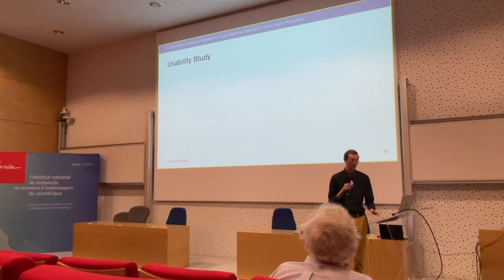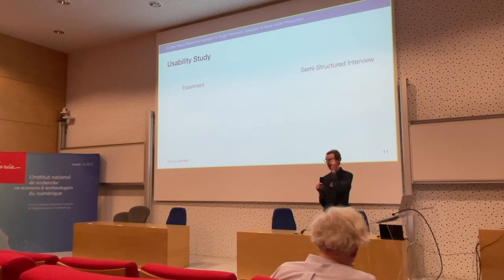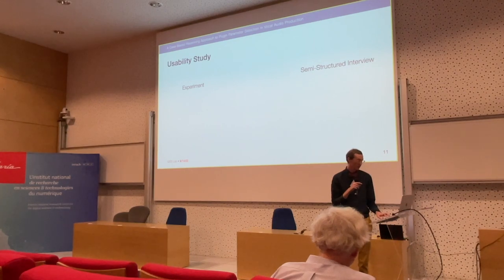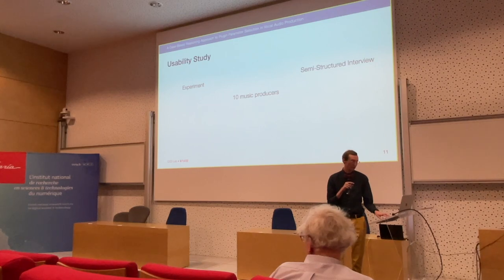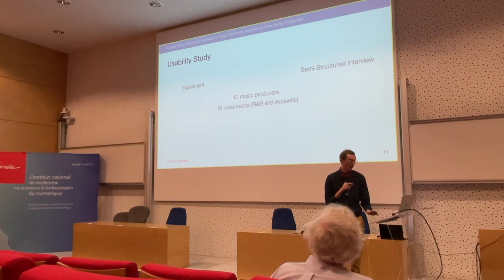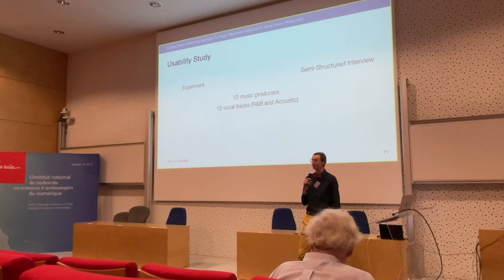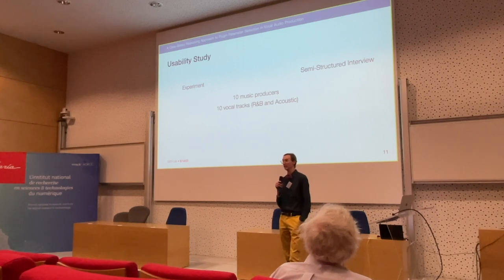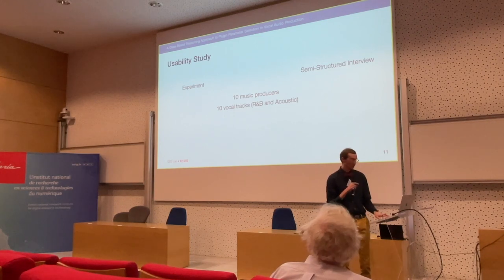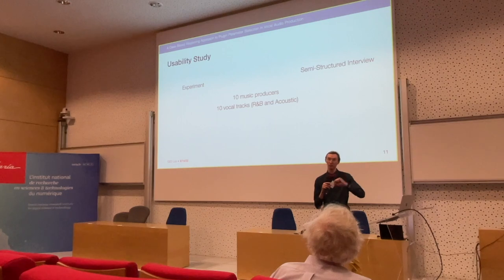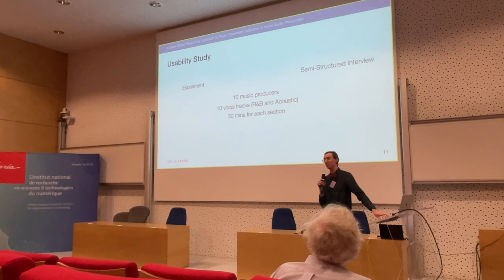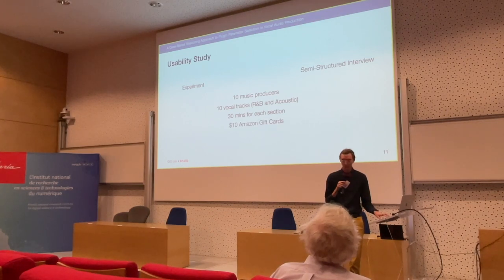For our usability study, we wanted to examine two things: the experiment itself, and a semi-structured interview that happened after. It was within-subject, so all participants did everything. There were 10 music producers used to evaluate both. Participants were instructed to produce tracks for two dichotomous genres. We changed from R&B and electric to R&B, and replaced gendered voice labels with soprano-leaning or tenor-leaning voices. Five participants did soprano-leaning first, then tenor, and the other five did tenor first, then soprano to alleviate ordering effects. Sessions were planned for 30 minutes but ended up being about an hour and a half, with nearly an hour for every single interview.